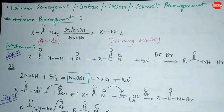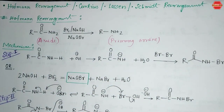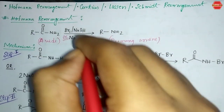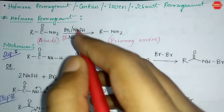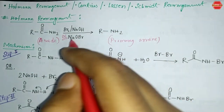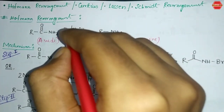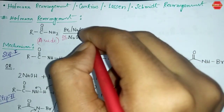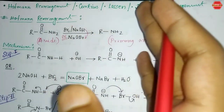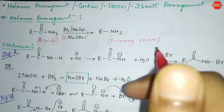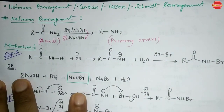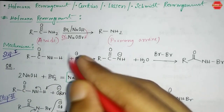The reagents used are Br₂/NaOH, or you can use NaOBr. Both can be used interchangeably. Br₂/NaOH generally forms NaOBr in the reaction medium, and then the overall reaction follows the rearrangement pathway.